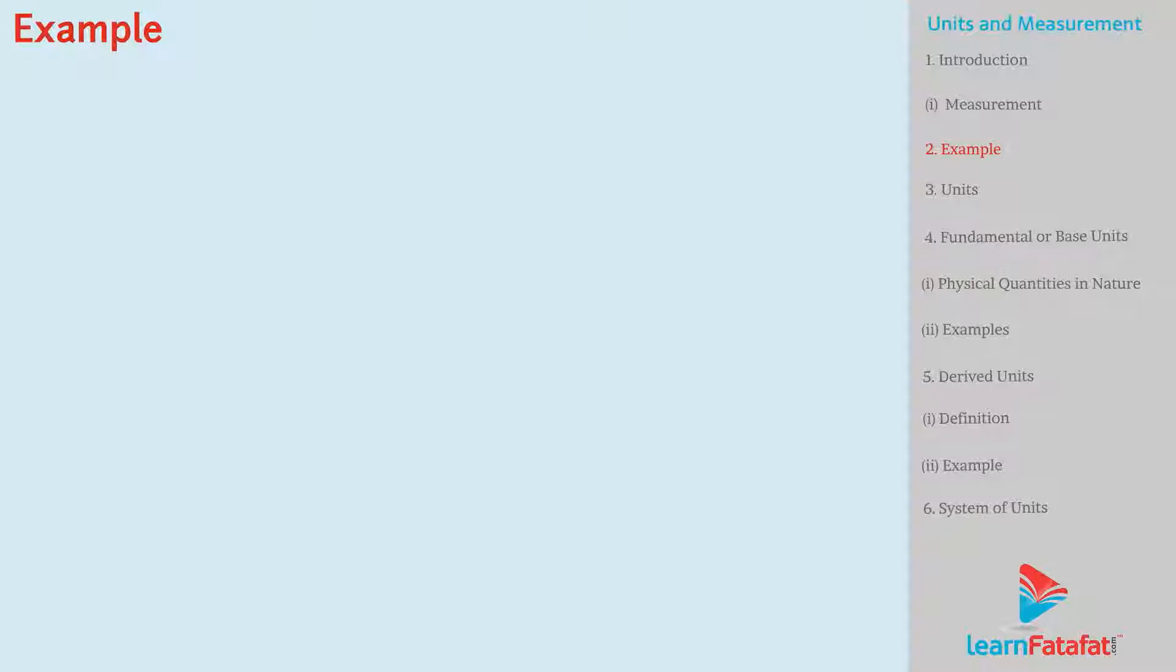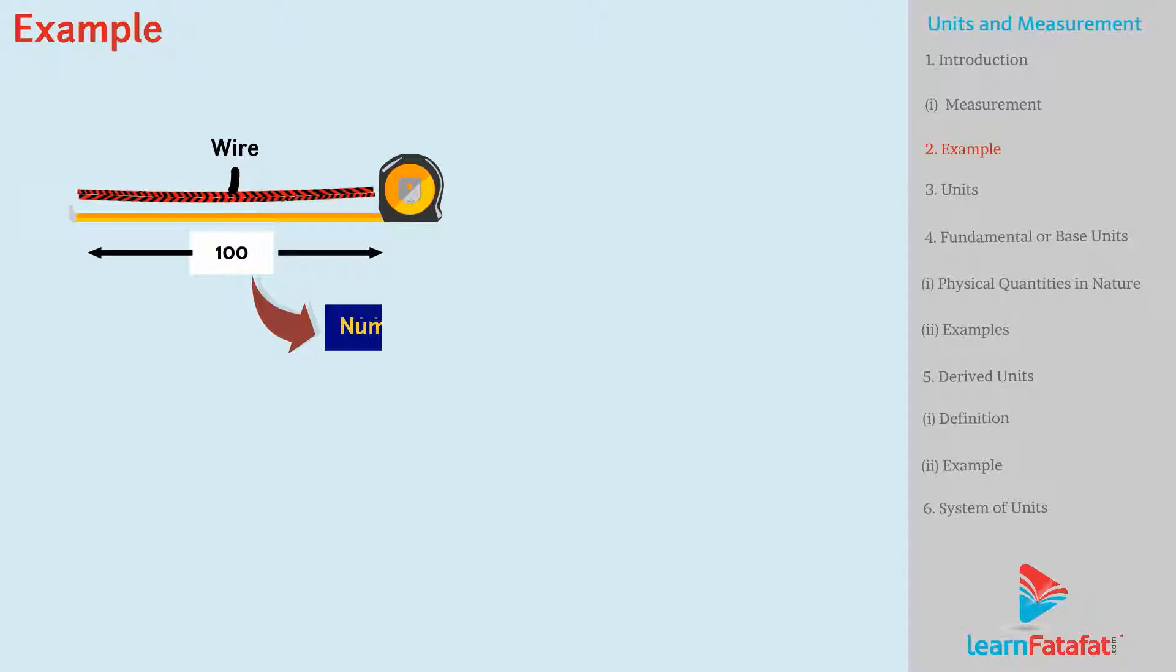Now, let us see another example. Here is a wire which is measured with the help of tape. The output of this measurement will be a number. This number is called the numerical measure.